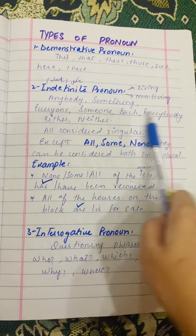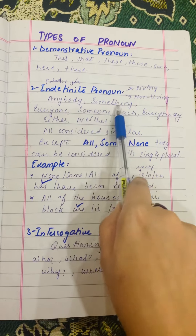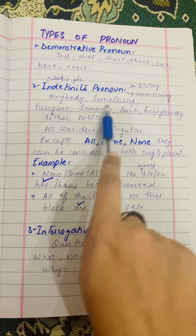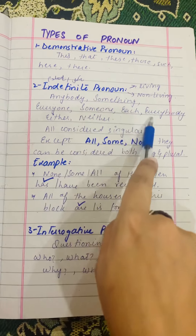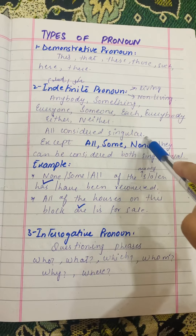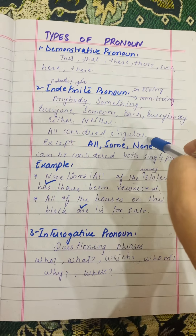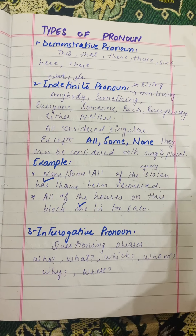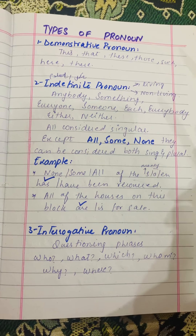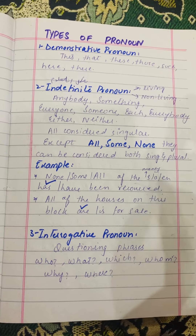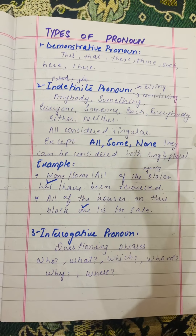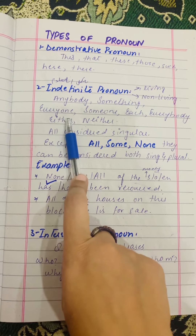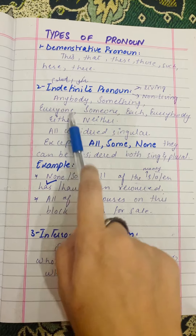Number two — indefinite pronouns. These refer to living and non-living things. They include: anybody, somebody, everyone, someone, each, everybody, either, neither. These are always considered singular. For example, we write 'Anybody is in the class,' never 'Anybody are in the class.' Similarly, 'Someone is in the class,' 'Everyone is here' — never 'Everyone are here.'